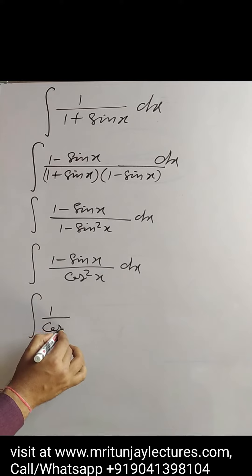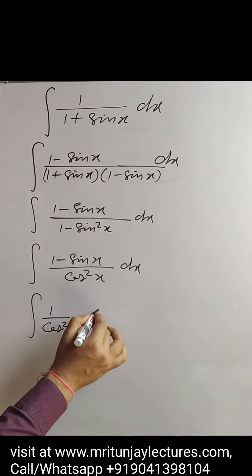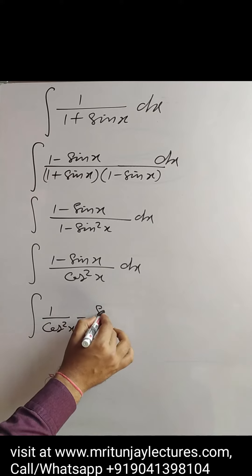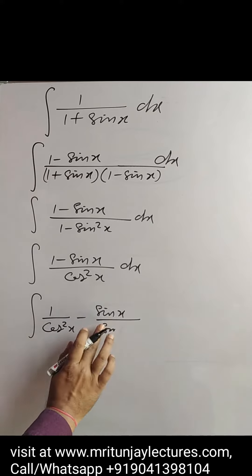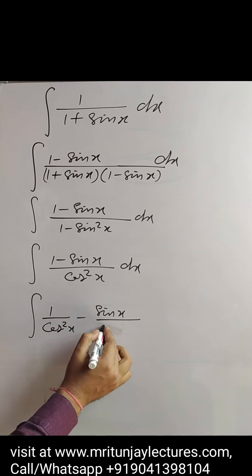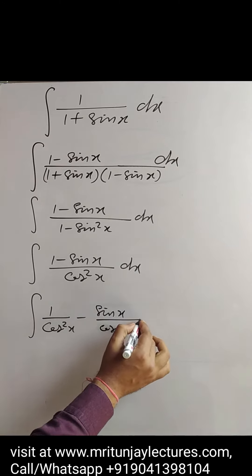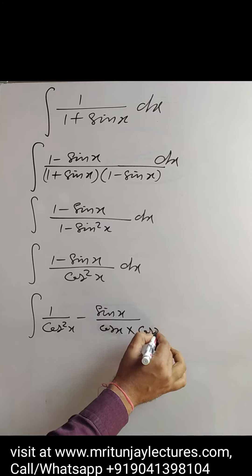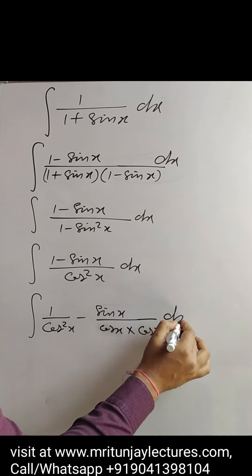After that, 1 upon cosec square x minus sin x into, that one is written cos x into cosec x, okay, dx.